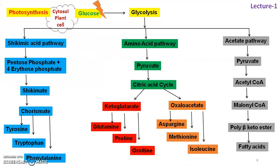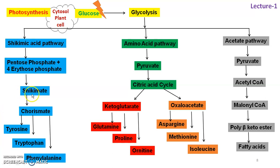Please observe this flowchart carefully. Photosynthesis takes place in the cytosol of the plant cell. Glucose is formed and when it undergoes glycolysis, it yields basic components: shikimic acid, amino acids, and acetate. When glucose undergoes glycolysis, it forms shikimic acid via pentose phosphate and erythrose-4-phosphate. When these condense together, they form shikimate, an intermediate compound, and then shikimate gives rise to the formation of chorismate.